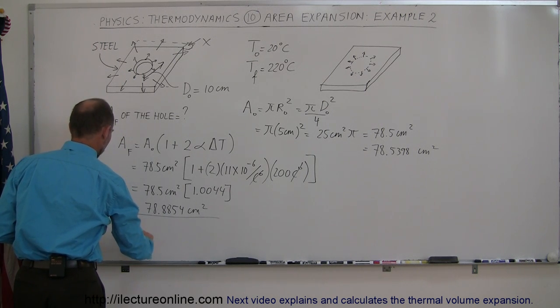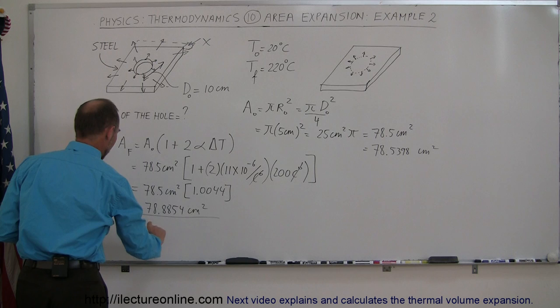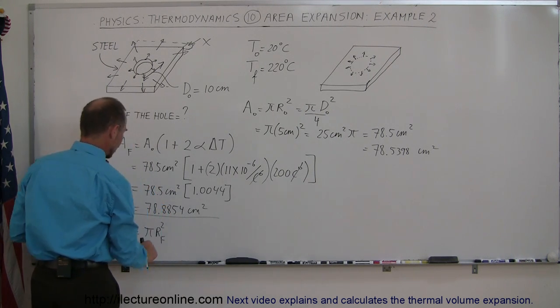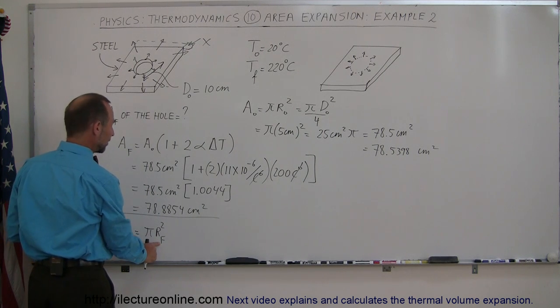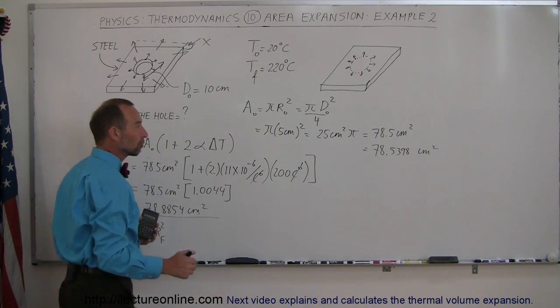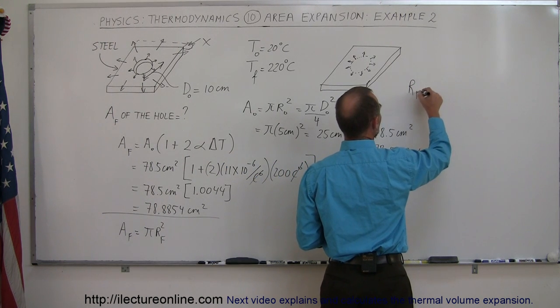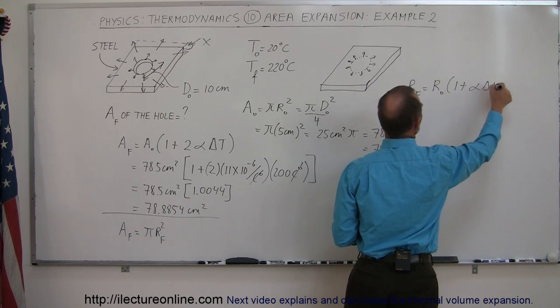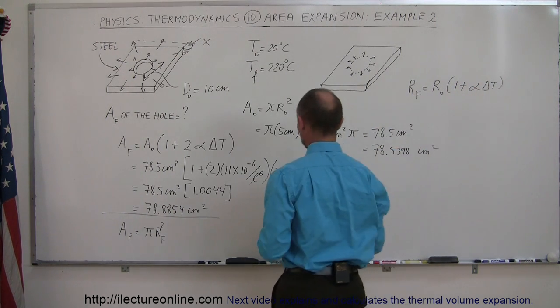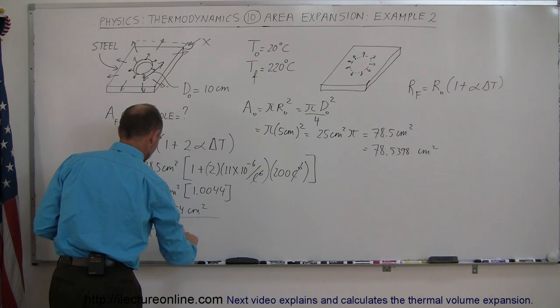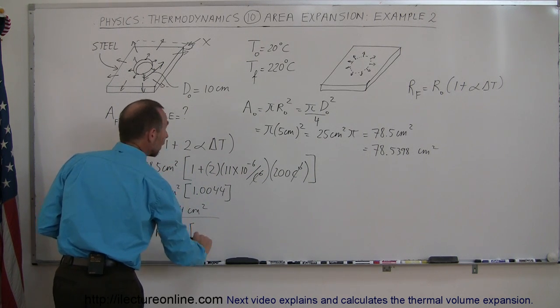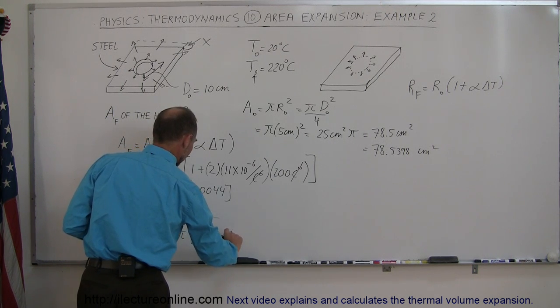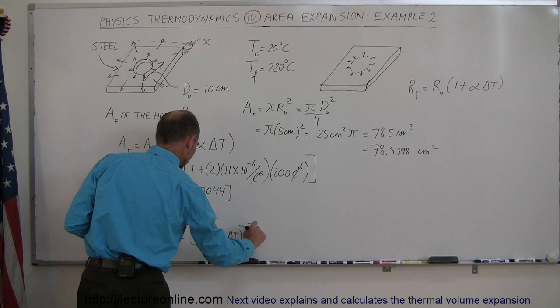What I can do here is the following. I can say that the A final of my hole is equal to pi r squared final. And my r final can be found out by using my linear expansion of coefficients, so I can say that r final is equal to r initial times 1 plus alpha delta T. I'm going to use this for my r final right here, so this is equal to pi times r initial times 1 plus alpha delta T, and that would be quantity squared.